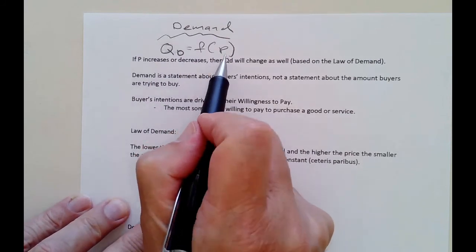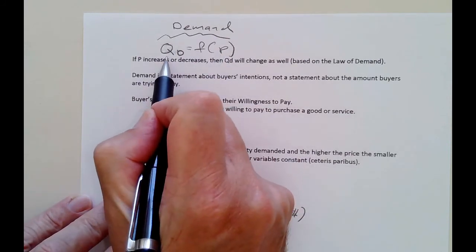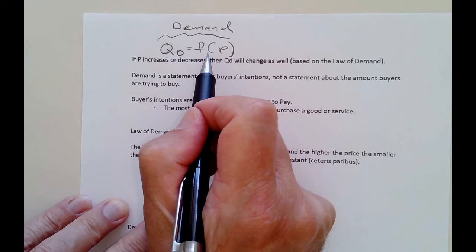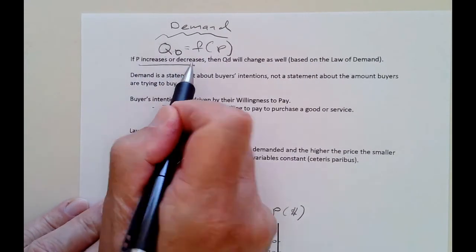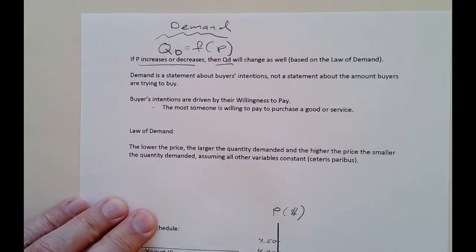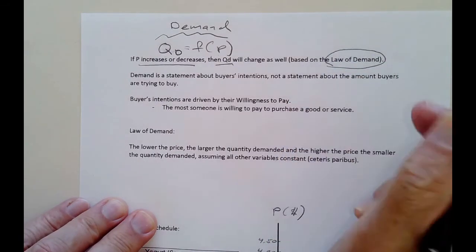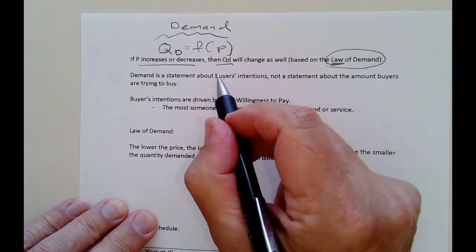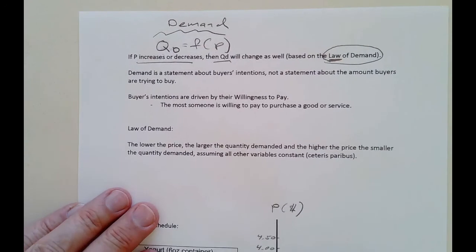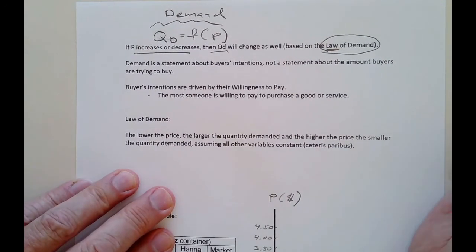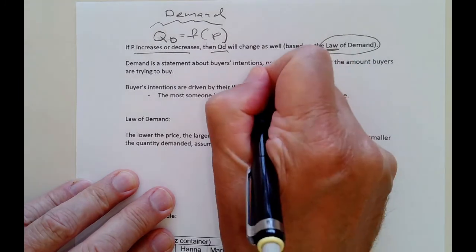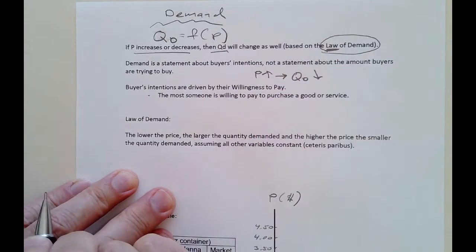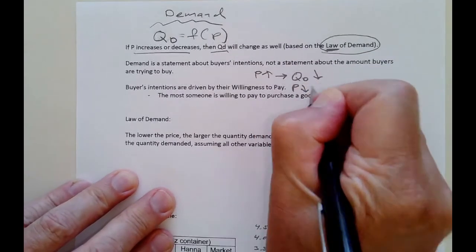Demand looks at all the different possible prices and how each affects quantity demanded. Since quantity demanded depends on price, quantity demanded is the dependent variable and price is the independent variable. If price increases or decreases, that changes quantity demanded. The way they work together is through what economists call the law of demand. Even though we call it a law, there are some exceptions, so it's really a hypothesis about how price and quantity demanded relate. The law of demand states: if price goes up, quantity demanded goes down; if price goes down, quantity demanded goes up.